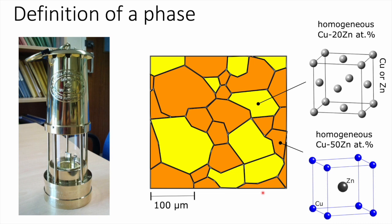So far I've talked about two kinds of phases: a liquid phase like the seawater, and solid phases like ice with its particular crystalline structure. In the case of brass, we have the so-called alpha and beta brass — alpha brass and beta brass — both solid. All the solid phases discussed are crystalline.